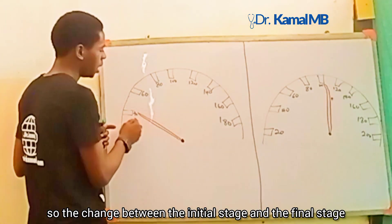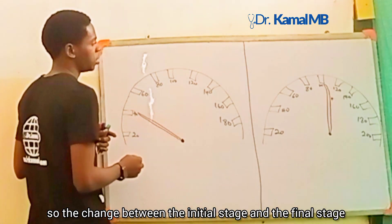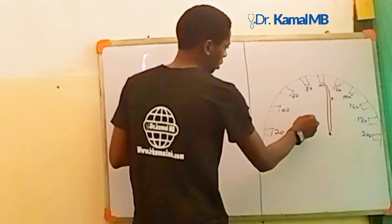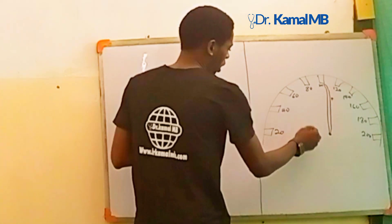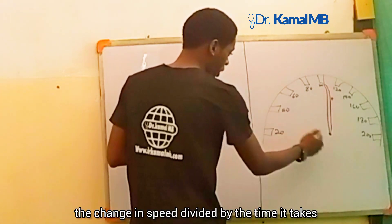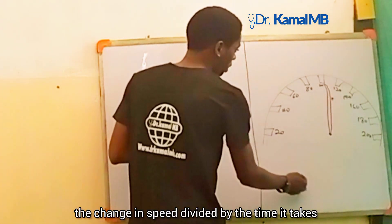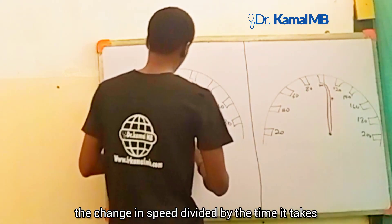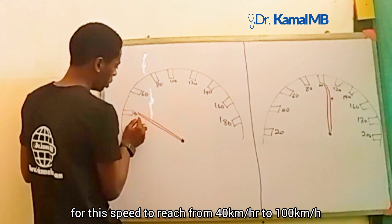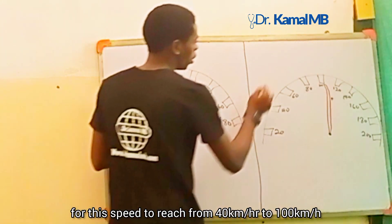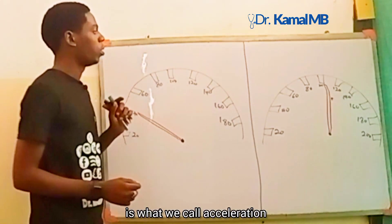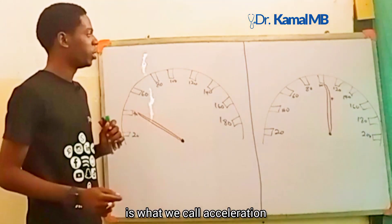The change between the initial stage and the final stage — that is, the change in speed divided by the time it takes to go from 40 to 100 km/h — is what we call acceleration.